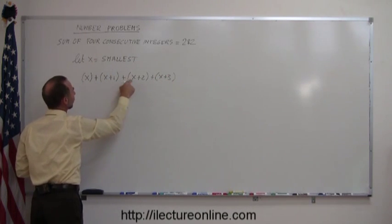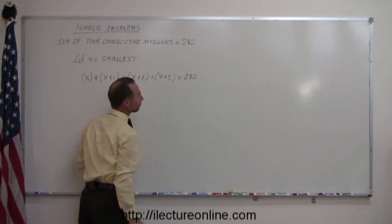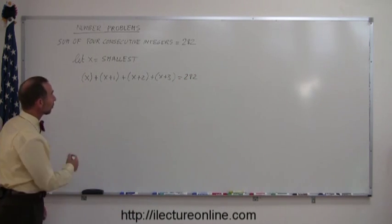And the problem tells us when we add the four consecutive integers together, they add up to 282. Okay, and all we have to do now is solve this algebraically.